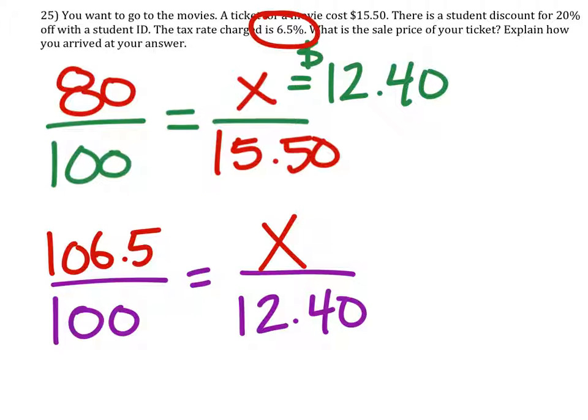Again, I will skip this one. You can use the cross multiplication method or whatever you want to do. So, 12.4 times 106.5 divided by 100 tells us that the final price of this ticket would be $13.21. Thank you.